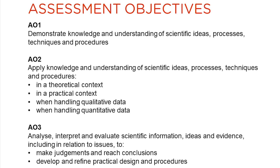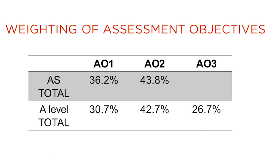This slide lists the assessment objectives for both AS and A-level chemistry. There is a greater weighting of AO3 in the A-level qualification compared with the AS. AO1 is higher in the AS, with AO2 broadly the same in both.